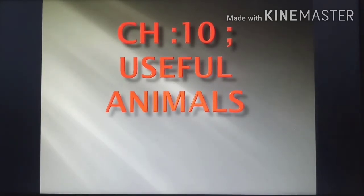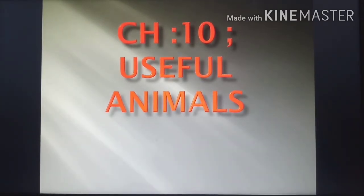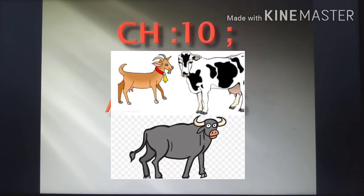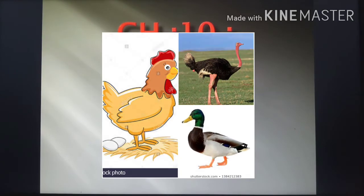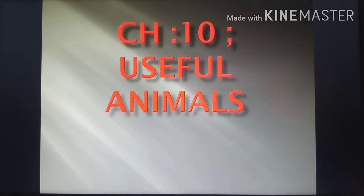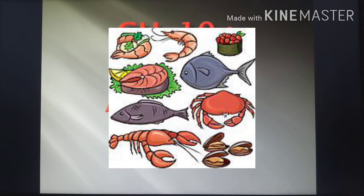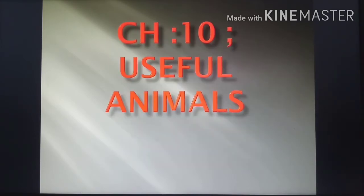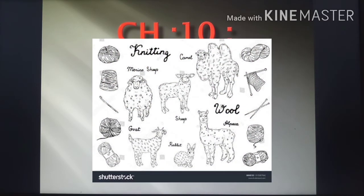Animals are useful to us in many ways. They are an essential part of our surroundings, our atmosphere. Animals give us milk, animals give us eggs. Animals give us wool. We wear woolen clothes in winter season.